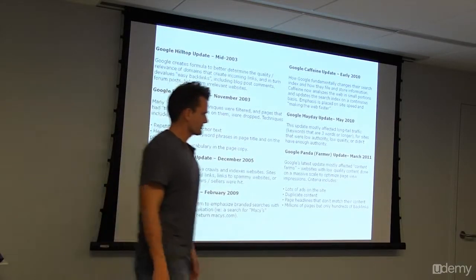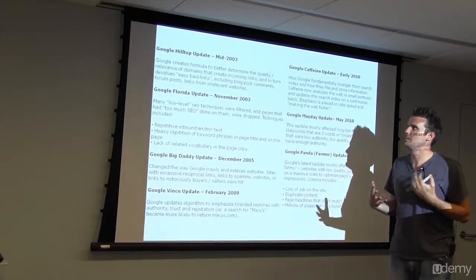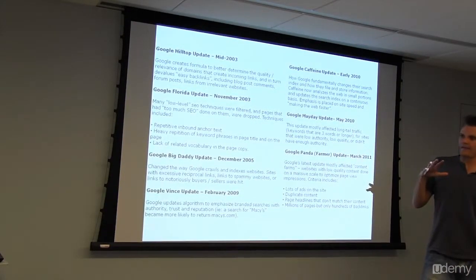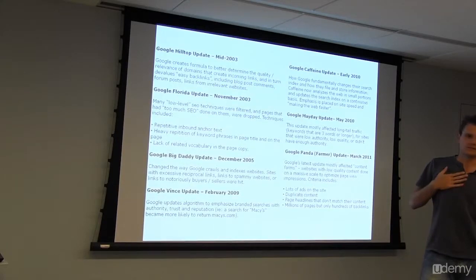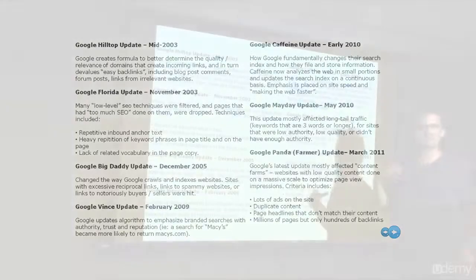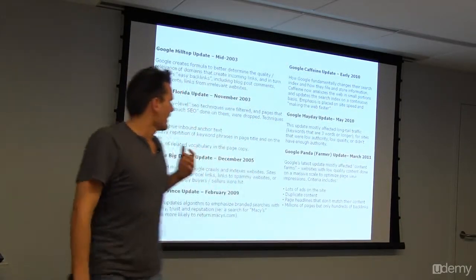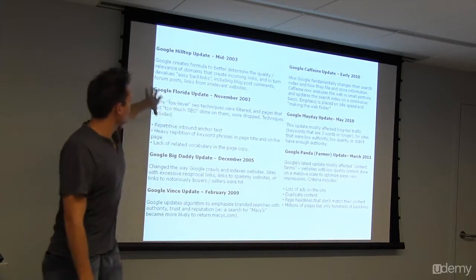So there's a number of different algorithm updates that Google has created over the last decade or so. And as we said earlier, the search engine algorithm updates more than once a day, with minor updates that we probably don't notice. But there's roughly every year and a half to two years, there's a major algorithm shift, where they significantly change how they're doing things, and it really throws people off. The Hilltop update, the Florida update, Big Daddy.